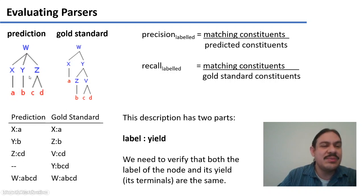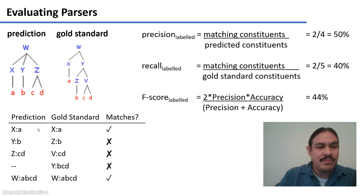So these are the labels of nodes, and then we have the terminals here. This is what we're supposed to get. However, what the system gave us, its prediction, was W as the primary node, as the head, and then we have X, Y, and Z. For example, X goes to the terminal A, and so forth. So in our prediction, in our predicted tree, in the prediction that our system made, we have a constituent that has the label X and that has the yield A.